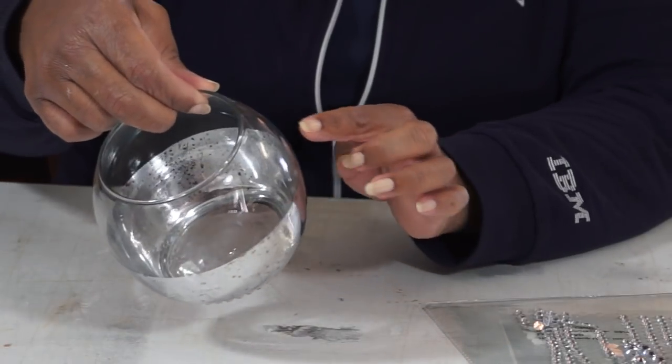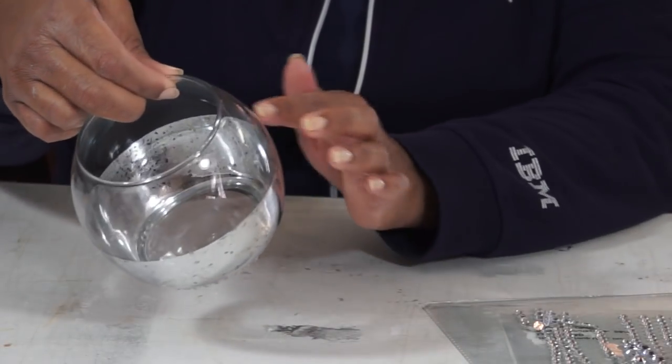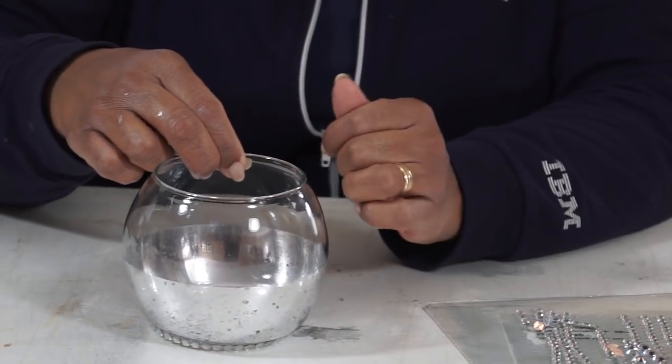And so what we're gonna do now is right around here we see this mercury glass, we're gonna go around that edge with a roll of diamond wrap as well.